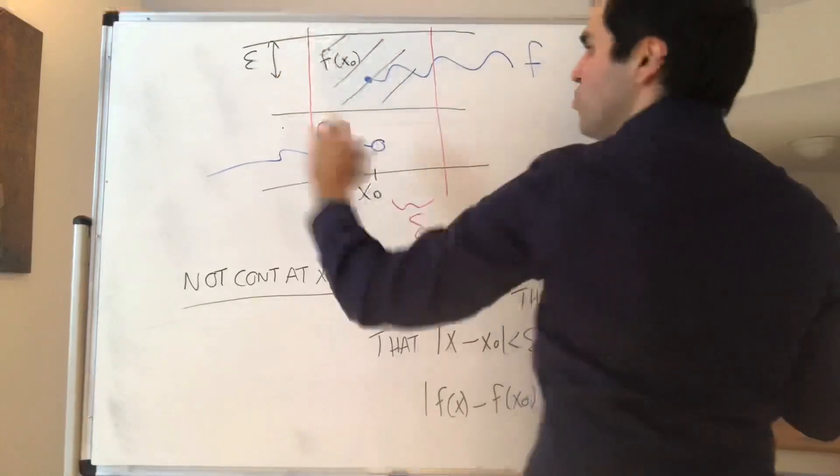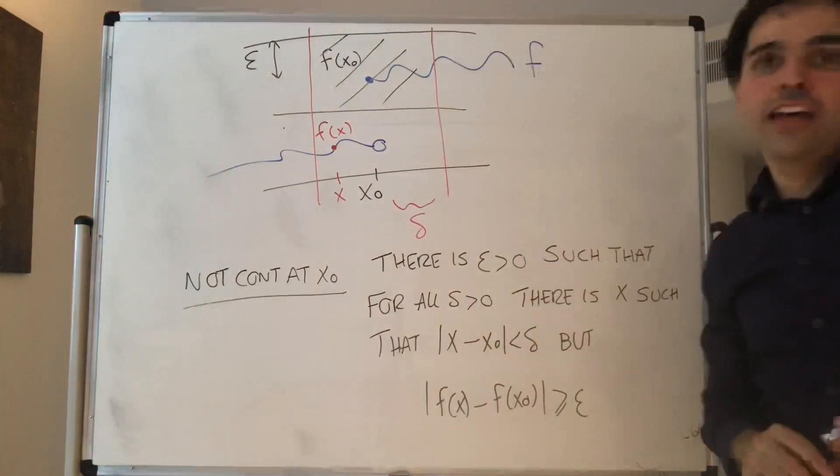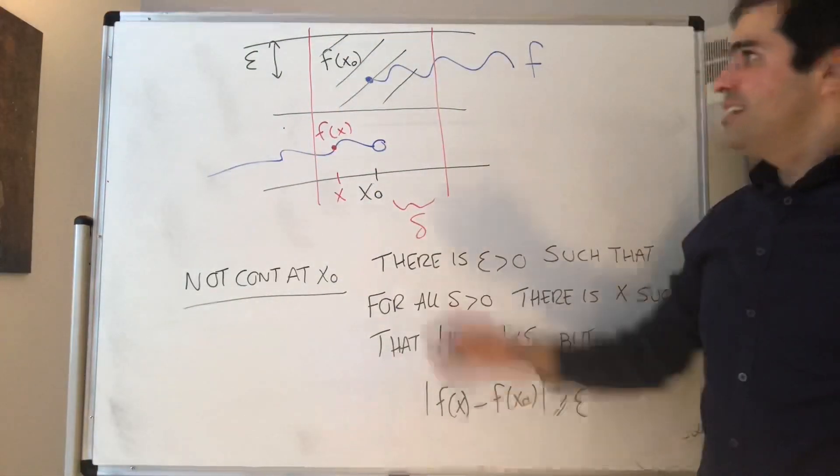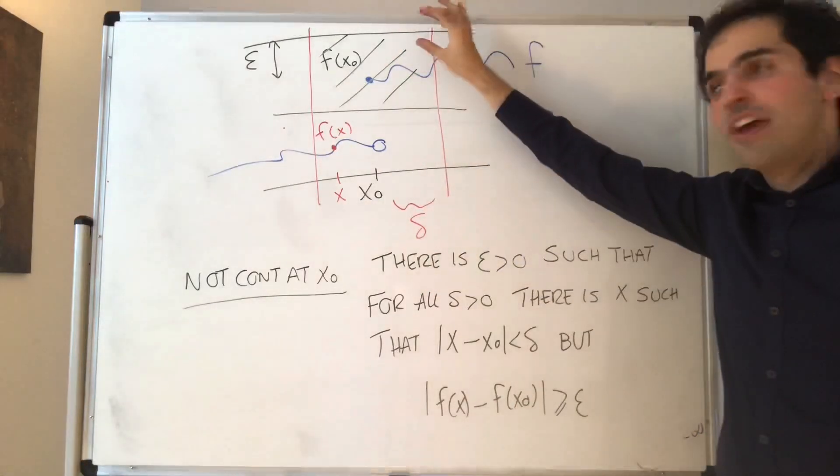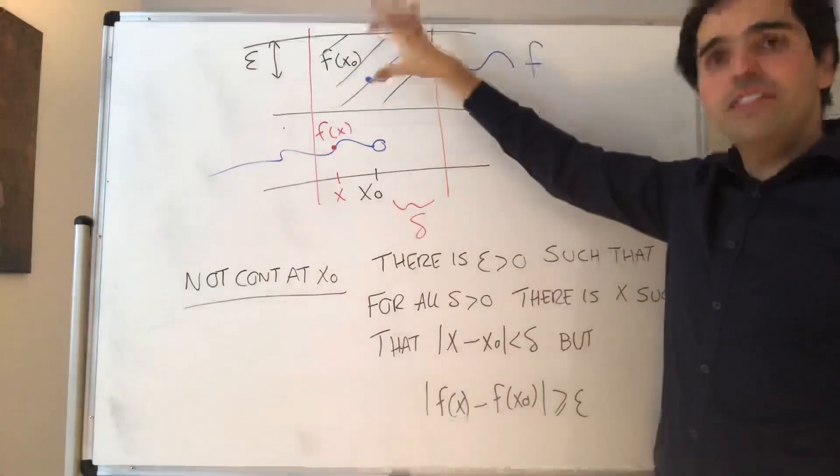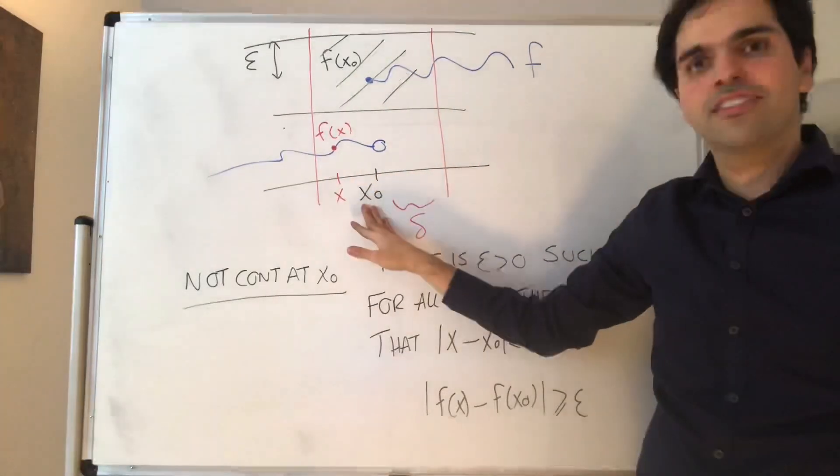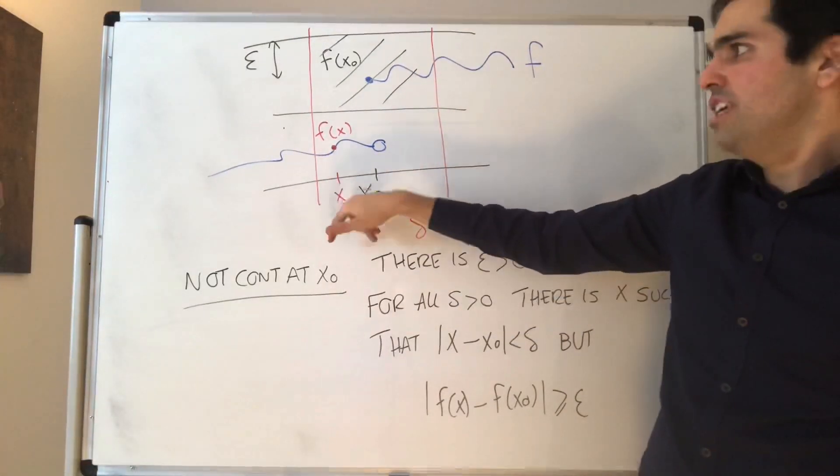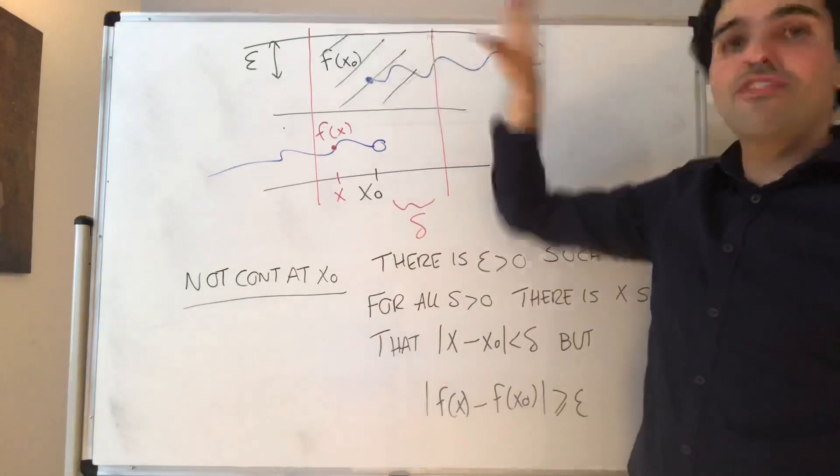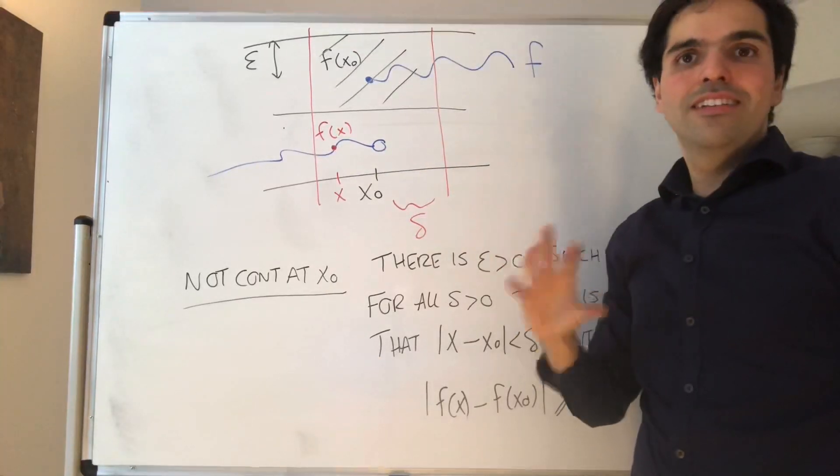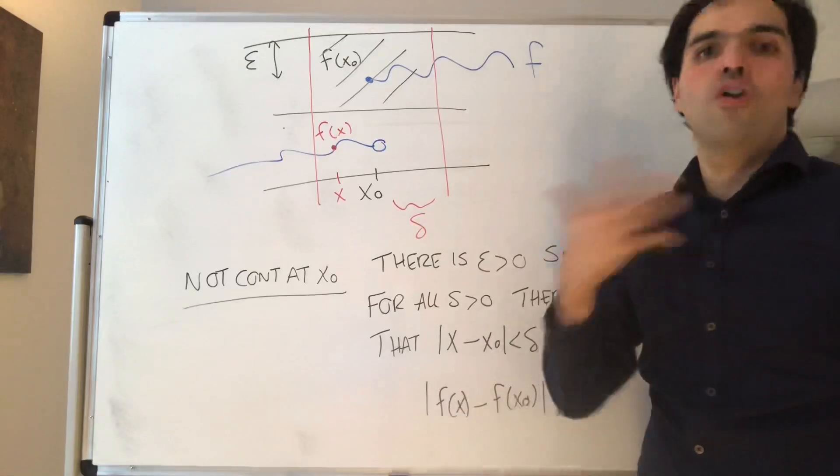So x says, no, no, no, I don't want to be part of the epsilon club. OK? So again, there is a fixed error, such that no matter how close we are to x0, there is always some evil x that is never inside the good region. So literally the opposite of what we want.